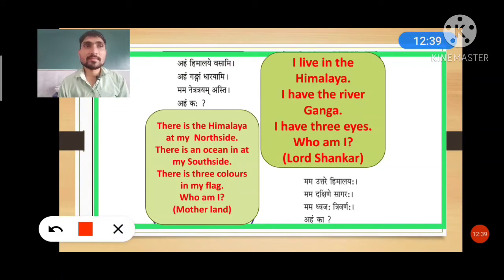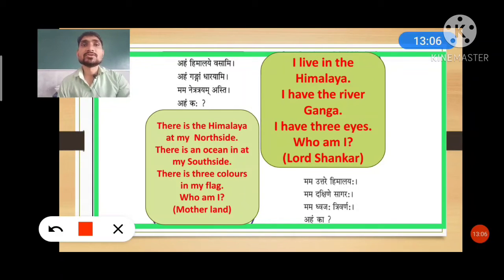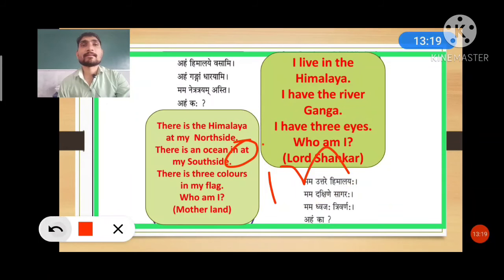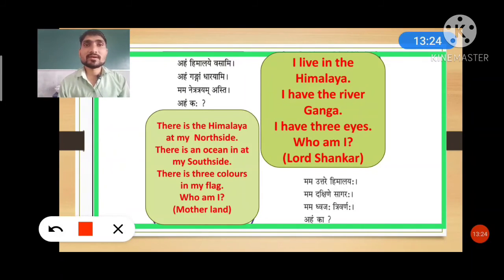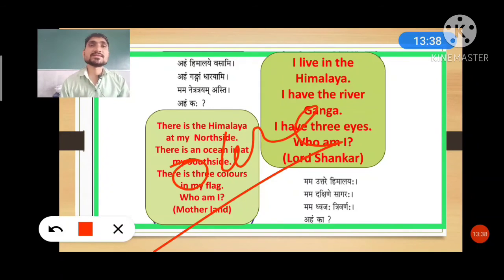Next translation: mama uttare himalayaha means 'there is the Himalaya at my north side.' Mama dakshine sagaraha means 'there is an ocean in my south side' — you can write 'in' or 'at.' Mama dhwaja trivarnaha means 'there are three colors in my flag' — both 'there is three colors' and 'there are three colors' are acceptable. Aham ka — who am I? The answer is motherland.